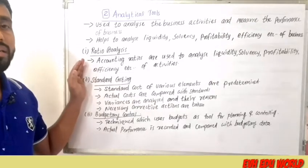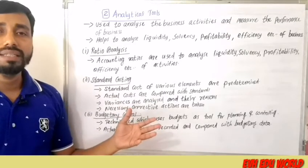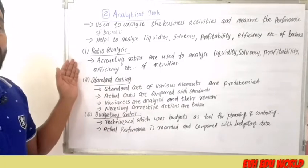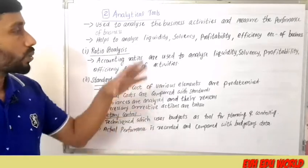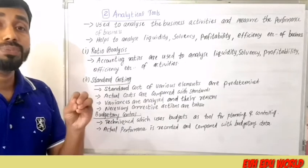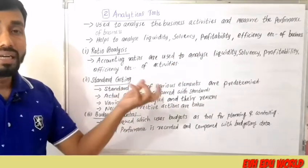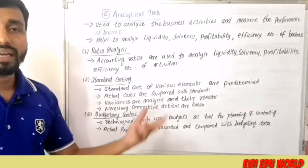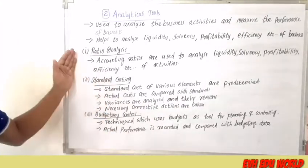Ratio analysis means expressing one number in relation to another to study the performance of an organization. Accounting ratios such as liquidity ratio, solvency ratio, profitability ratios, and efficiency ratios are applied. Liquidity ratio shows the ability of a firm to meet short-term liabilities; solvency ratio studies long-term ability to meet liabilities; profitability ratio shows net profit; and efficiency ratio shows the efficiency of an organization.